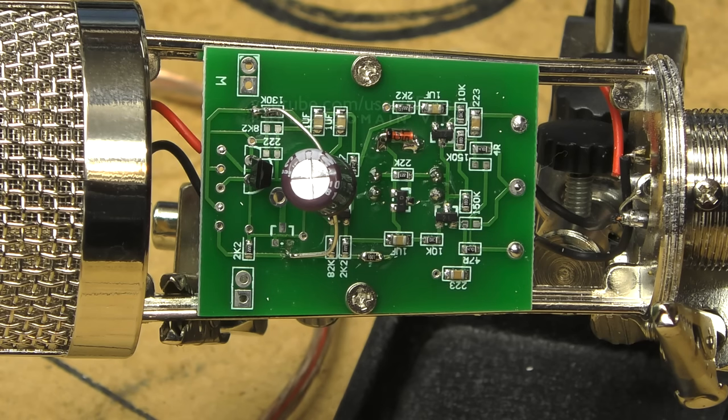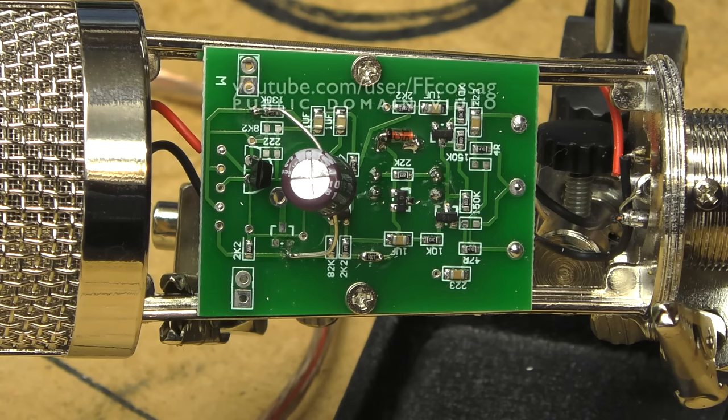This is the inside of a BM800 microphone, and in order to improve its noise floor, what you need to do is this.